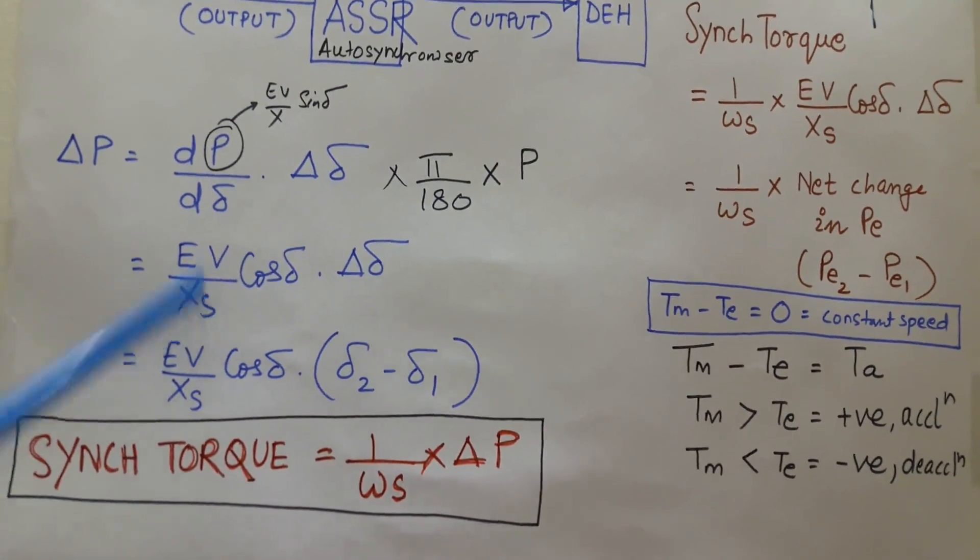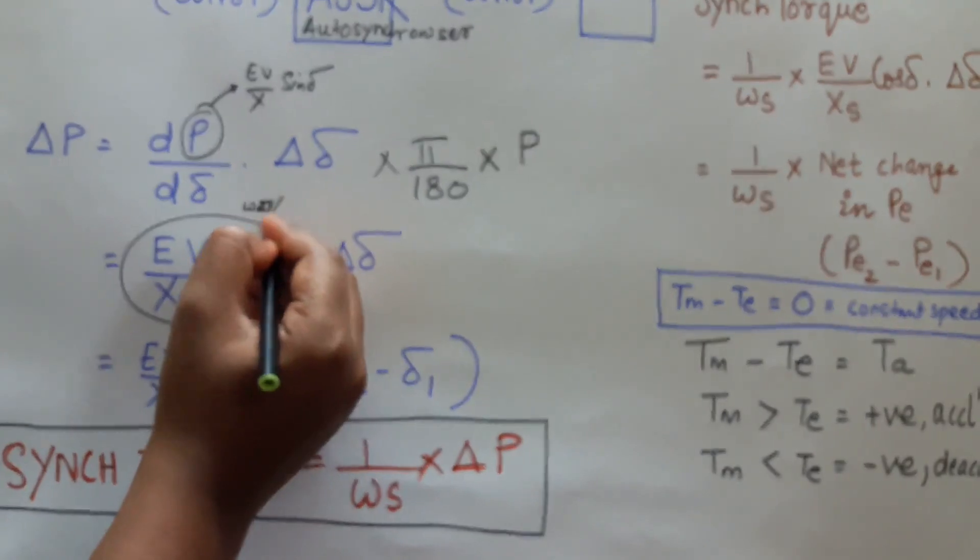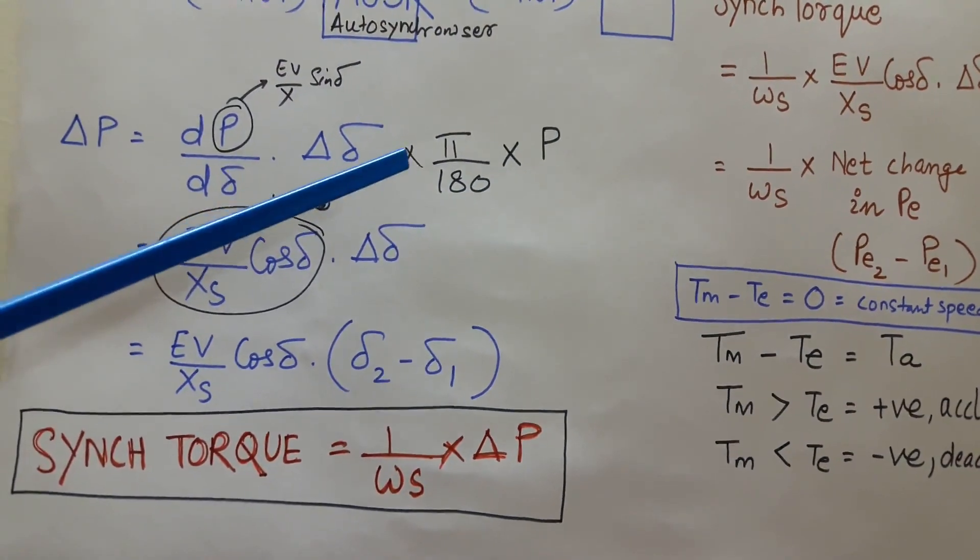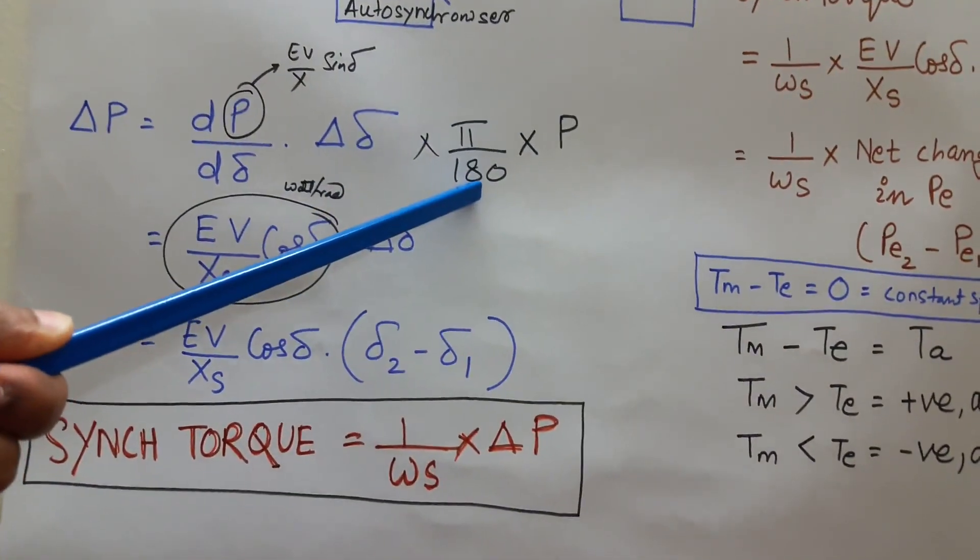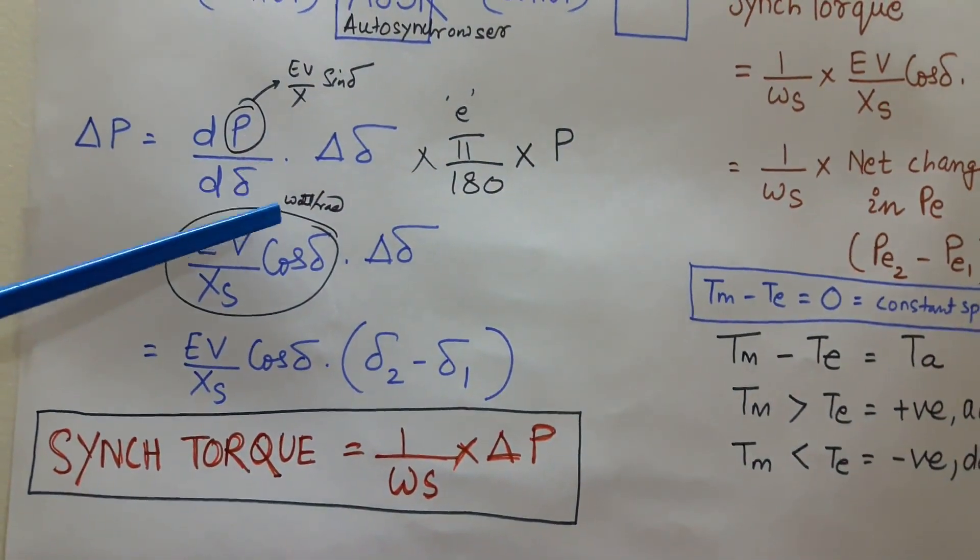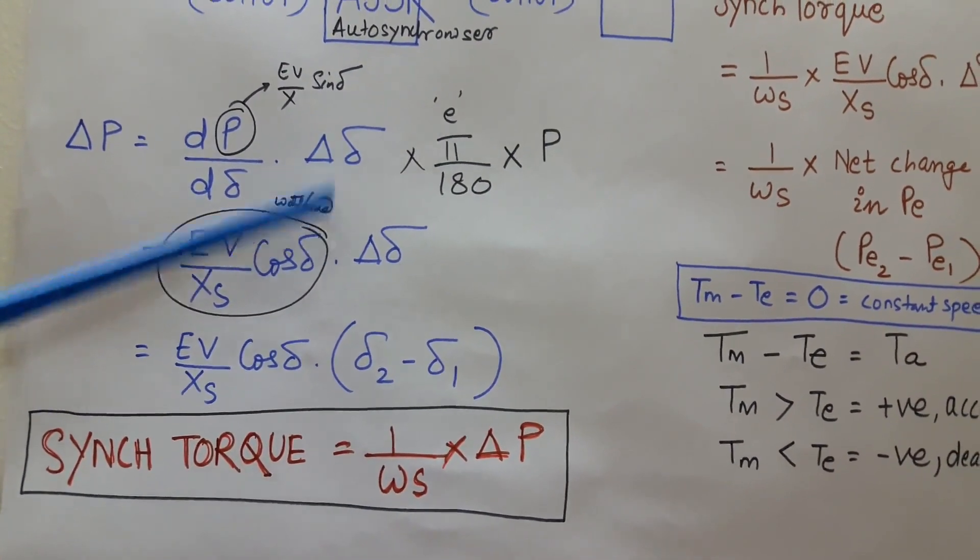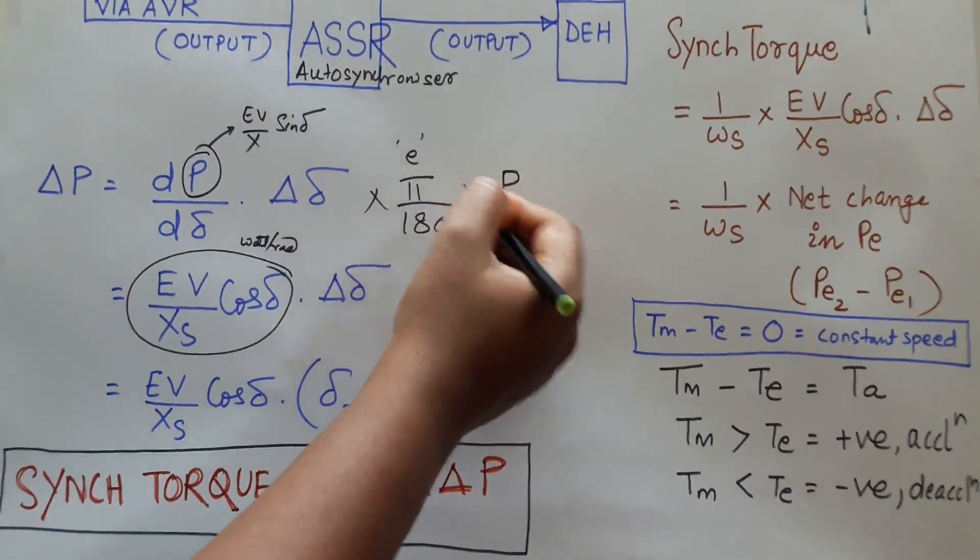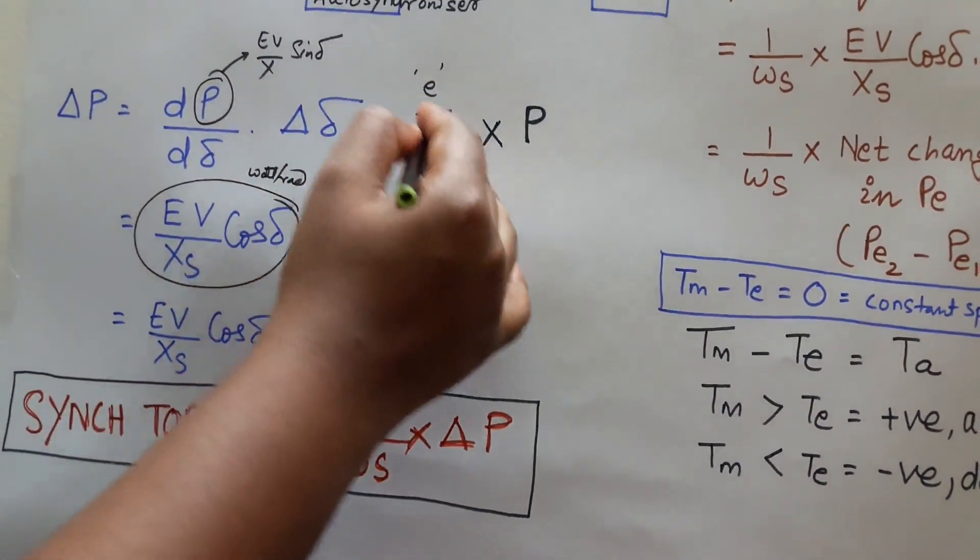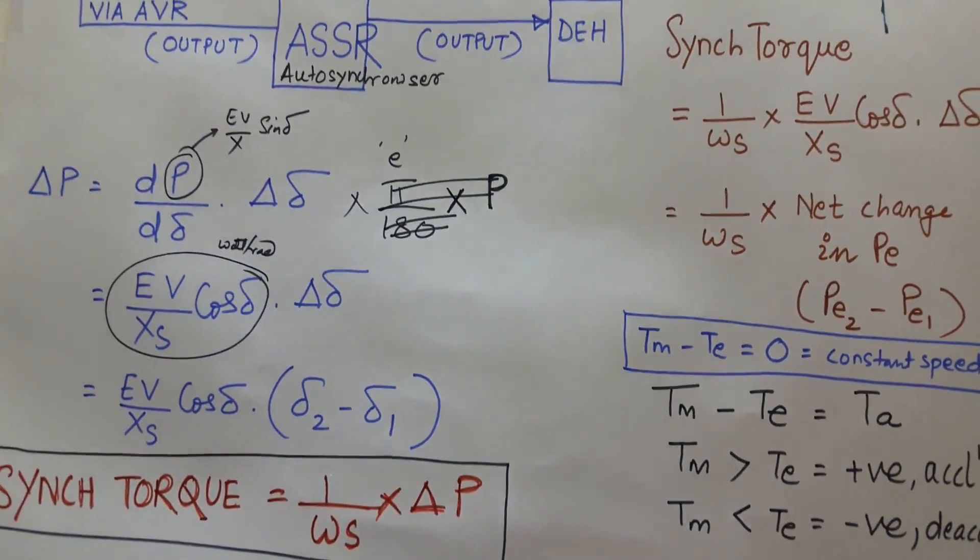This EV by cos delta I am getting in watt per radian. If I want to convert this radian into degree, I have to multiply this term with pi by 180. To convert it into electrical degree, and if I want to convert this watt per electrical degree into mechanical degree, I have to multiply pi by 180 with one more term known as pole pairs, the number of pole pairs. So let us forget about this two and let us consider that we are talking in terms of watt per radian.